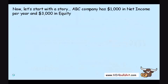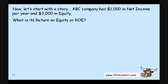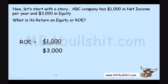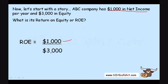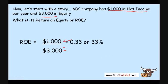Let's start with a story. Let's say that ABC Company has $1,000 in net income per year and $3,000 in equity. What is the return on equity, or ROE? The ROE is $1,000 divided by $3,000. The $1,000 comes from net income based on the most recent year's earnings, and the $3,000 is equity. We get an ROE of 0.33 or 33%.